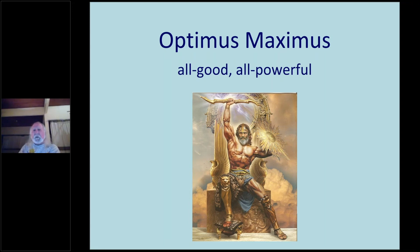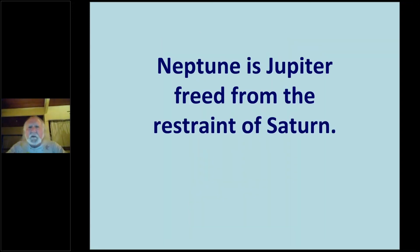I'm going to say this here when we're talking about Jupiter. I'm going to say this again in a little bit when we're talking about Neptune. But Jupiter and Neptune are the same planet. I know that sounds crazy at first. But basically, Neptune is simply Jupiter that's freed from the restraints of Saturn. Or to say that the other way, Jupiter is Neptune that is restrained by Saturn. Jupiter is expansive, but Jupiter can only expand to the limits of Saturn.